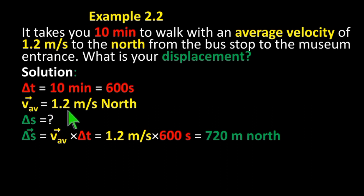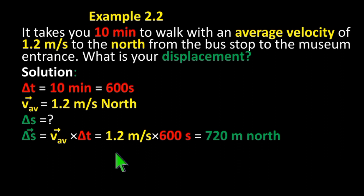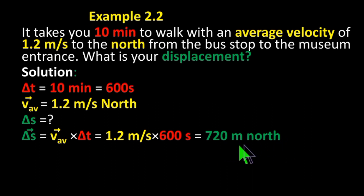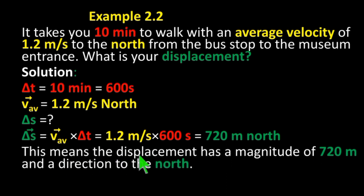Change in displacement equals 1.2 meters per second times 600 seconds, which equals 720 meters. This means the displacement has a magnitude of 720 meters in a direction to the north.